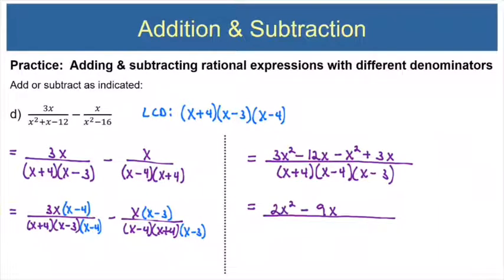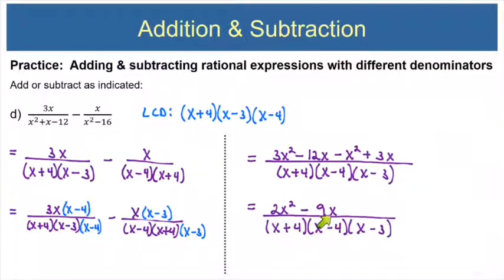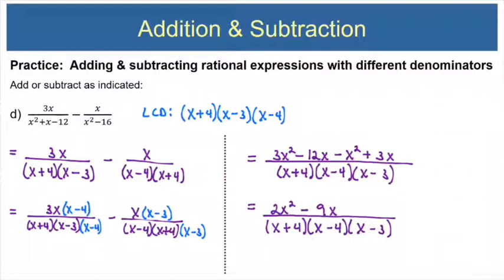Now we're ready to combine like terms. 3x squared and minus 1x squared make 2x squared. Minus 12x and plus 3x make minus 9x. The denominator stays as those three factors. We could factor out a GCF of x from the top, but it would not help us cancel anything from the denominator. So this is in final form.